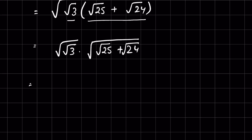Now, square root of a means a raised to the power of 1/2. When that result is again under a square root, it is raised to the power of 1/2 again, which means it equals a raised to the power of 1/4.